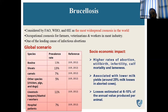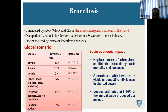Brucellosis is an occupational zoonosis for farmers, veterinarians, and workers in the meat industry. It is one of the leading causes of infection abortions. As per the International Livestock Research Institute, Nairobi, Kenya, the prevalence rate in bovines is 13%, in shoats is 13%, in camels 7%, in chickens, pigs, and dogs 5%. Livestock keepers and abattoir workers are at 11%, and hospital patients at 7%.